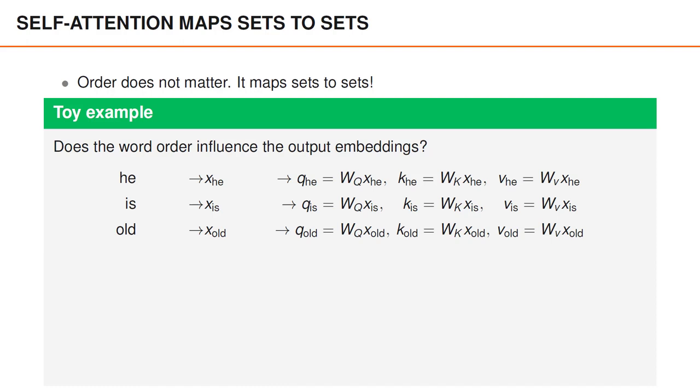To compute the query key and value vectors for one of the input vectors we simply take its word embedding say x he and multiply it with the matrices wq wk and wv respectively. This gives the same query key and value vectors as usual but with the minor difference that we now refer to them as q he, k he and v he.